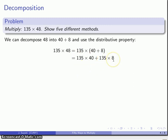So, that's 5400 plus 1080. And now, I can just add these two numbers. That's going to be 6480 as my product.